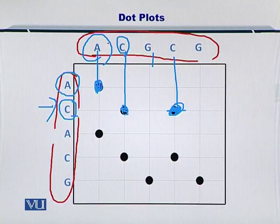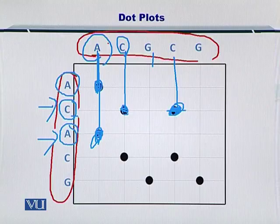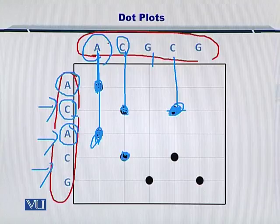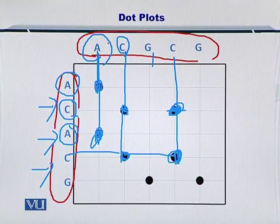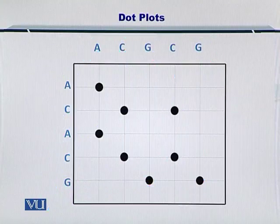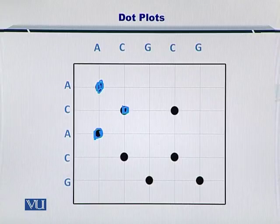Next, you move to the third row. A matches with A, so you insert a dot. A did not match C, G, C, or G, so you did not insert any dot on those positions. Next, you move to the fourth row and C only matched with this C, and C matched with another C as well. In the last row, G is there — G matches with this G and also with this other G. So now, you have plotted dots on all positions where the two nucleotides were matching each other.